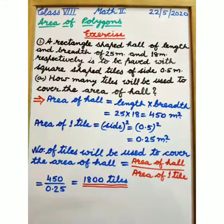Here, we will find first area of hall. As given hall is in the shape of rectangle, we use to find area of hall the formula length into breadth and we get 25 into 18 is equal to 450 meter square.